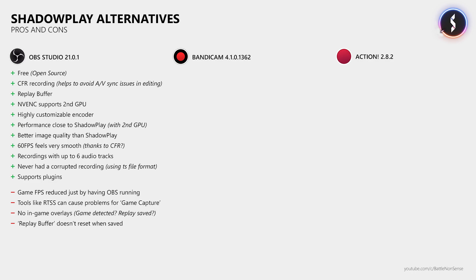The replay buffer is also not reset when you save it. This means that if you have 8 minutes of gameplay in the buffer and save it, you get an 8-minute video file. When you save the replay buffer again 1 minute later, you get another 8-minute video instead of a 1-minute one. I would really prefer the replay buffer to reset every time it's saved, like it does in Shadowplay and Action. I would also like the option to store the replay buffer on a drive like Shadowplay and Action do, rather than in RAM. And unlike Shadowplay, Bandicam, and Action, OBS cannot use the title of the game for the recorded video filename, which makes organizing videos a bit harder than it needs to be.